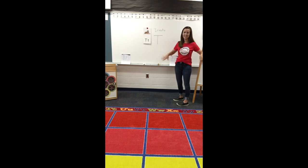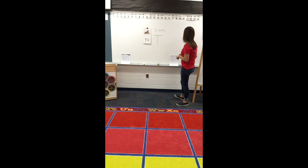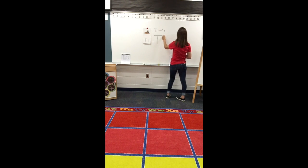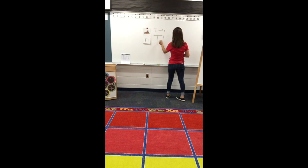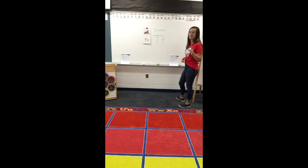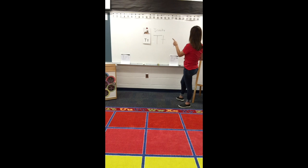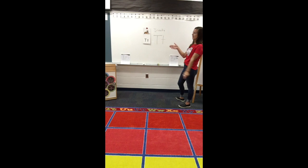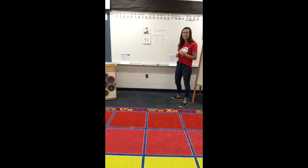Shake those hands out again — they're getting lots of work today. Let's watch as I do the lowercase T. Start at the top, pull down straight, lift to the middle, slide right short. Take your finger and trace it in the air with me: start at the top, pull down straight, lift to the middle, slide right short. Take your hand in the air and trace it on your hand. Ready? Start at the top, pull down straight, lift to the middle, slide right short. Good job!